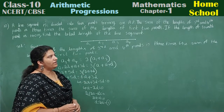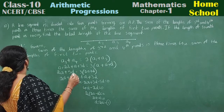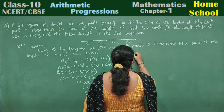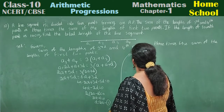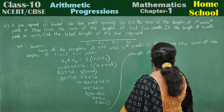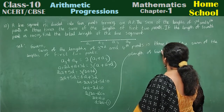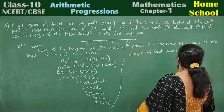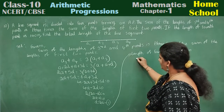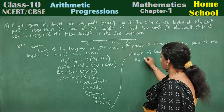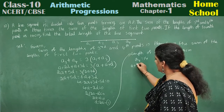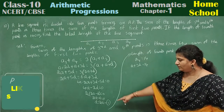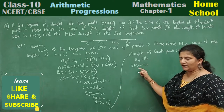Now read the next condition: if the length of the fourth part is 14 centimeters. So a4 is equal to 14. The general form of a4 is a plus 3d, so a plus 3d is equal to 14. Now substitute the value of d.